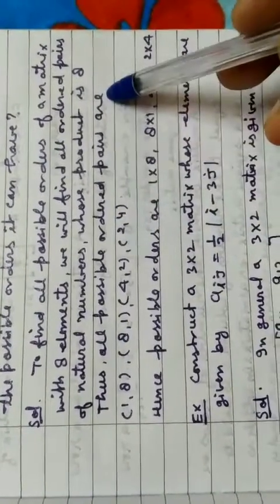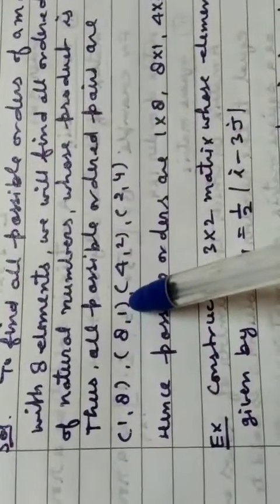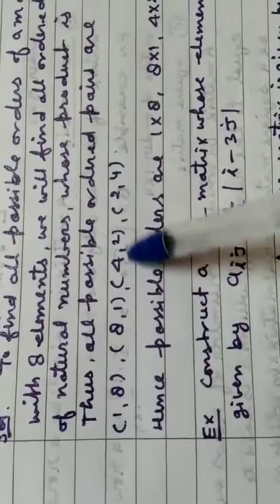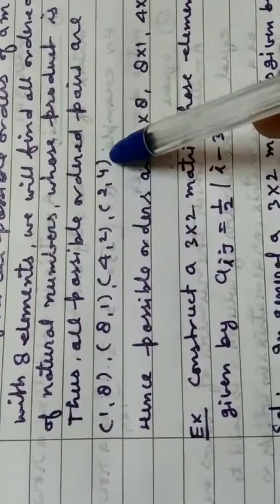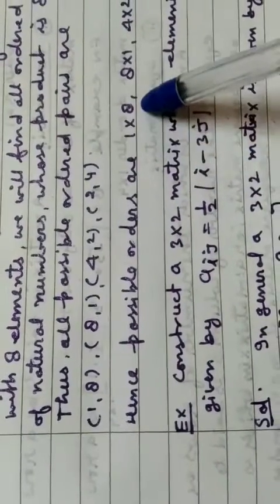Thus, all possible ordered pairs are 1 × 8 is equal to 8, 8 × 1 is equal to 8, 4 × 2 is equal to 8, 2 × 4 is also equal to 8. Hence, possible orders are 1 × 8, 8 × 1, 4 × 2, 2 × 4.